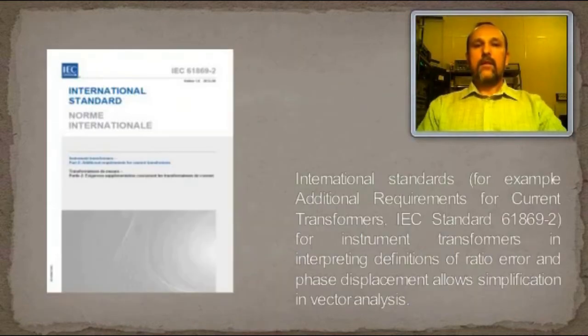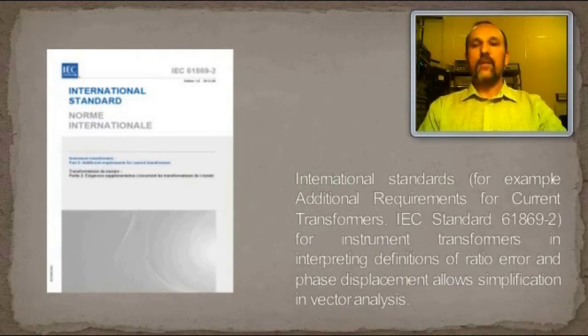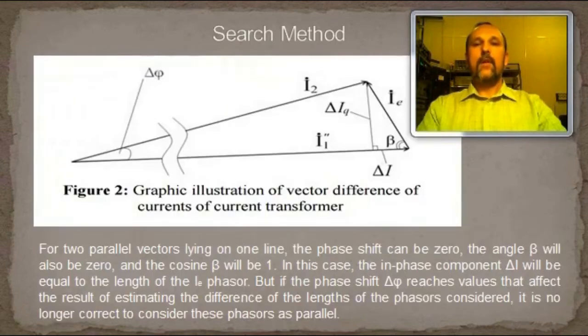International standards for instrument transformers in interpreting definitions of ratio error and phase displacement allows simplification in vector analysis. Finding the limits of the correctness of applying approximations when estimating errors of instrument transformers is a task which has not been widely highlighted. The purpose of this work is to establish the limitations for the correctness of the application of the simplified analysis of the interrelation between the phasors of secondary currents of the device under test and working standard, which is based on the assumption of parallelism of these two phasors.